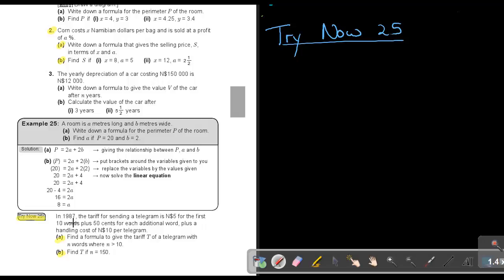In 1987, the tariff for sending a telegram—we were not sending emails, we were sending telegrams—was costing 5 Namibian dollars for the first 10 words, plus 50 cents for each additional word, plus a handling cost of 10 Namibian dollars per telegram. Number A: find a formula given the tariff T of a telegram with N words where N is bigger than 10. To find that cost,